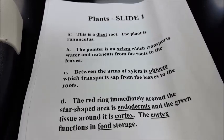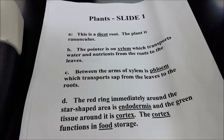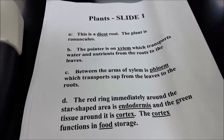Between the arms of the xylem is the phloem. This transports sap from the leaves to the roots and to other areas in the plant where sugar is needed.